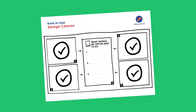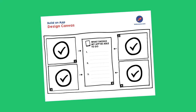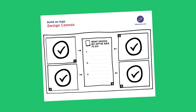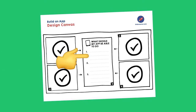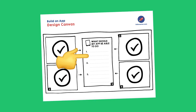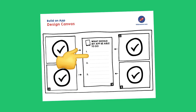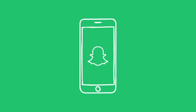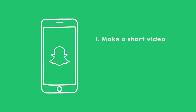Now we have the idea for your app, whom it is for, and where the app will be used. Great! The last box in the center, number five, is about everything that your app can do — we also call that the functionality of the app. For example, suppose you make an app to record and share videos, like Snapchat. Then your app must be able to: one, make a short video; two, edit the video; and three, share the video. There is room for three things, but there can be more or less.